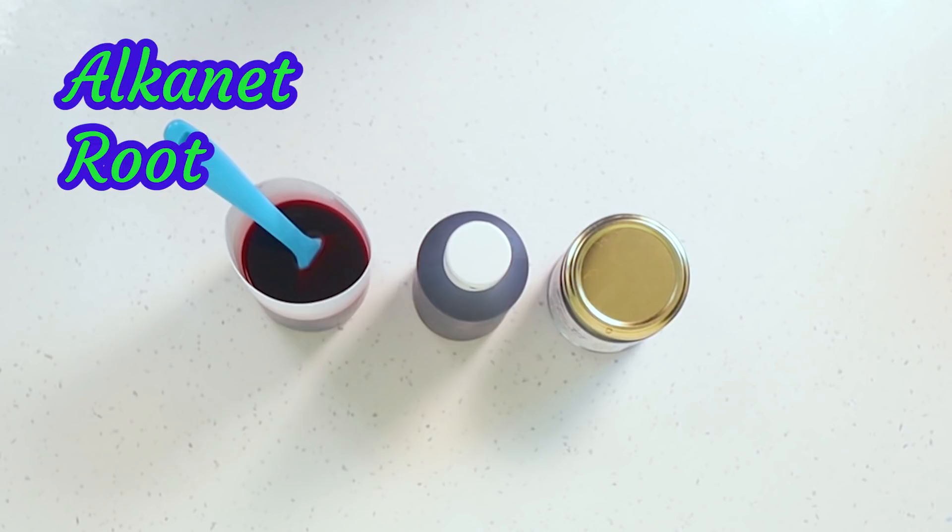Now the mad thing I think with alkanet root is when you do it as an infusion in oil it actually has a nice sort of cherry red color, but once we add it to the soap and the lye it turns into a purple.